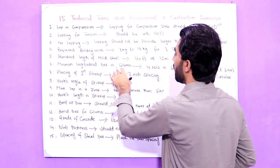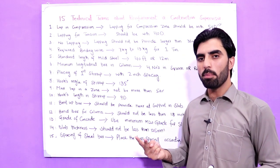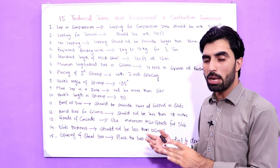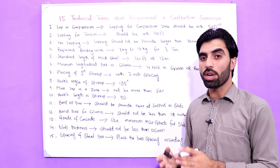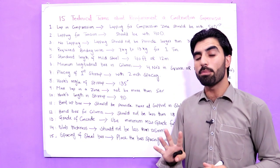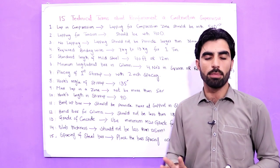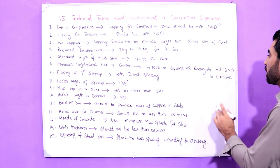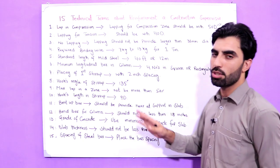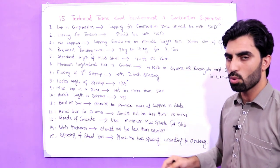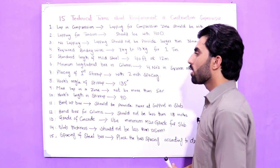The sixth term is minimum longitudinal bars in a column. There are two main column shapes: circular and rectangular or square. In a square or rectangular column, the minimum number of steel bars to be used is four. In a circular column, the minimum number of steel bars to be used is six.